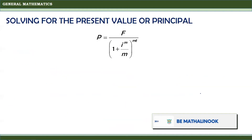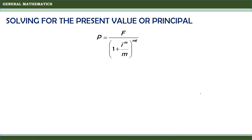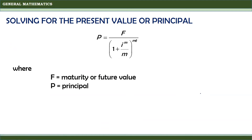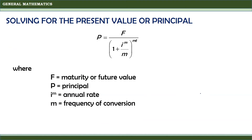In solving for the present value or principal, we use the formula P equals F divided by quantity 1 plus I(M) over M, raised to M times T. Where F is the future or maturity value, P is the principal, I(M) is the annual rate, M is the frequency of conversion, and T is the term in years.